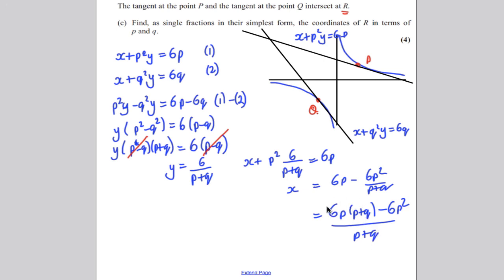And if you multiply this out, you'd get 6p² + 6pq - 6p². So you'd just be left with 6pq on the top, (p + q) on the bottom. There's your x, there's your y. State them and you're done.